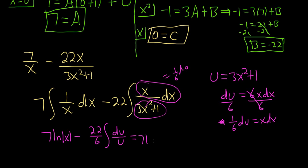So this is 7 ln absolute value of x minus 11 thirds. Right, you can simplify 22 over 6 just by dividing by 2. ln absolute value of u. But u is 3x squared plus 1. And we're almost done. Let's just not forget the plus C. It would be really funny but not funny to forget the plus C after all of this work. I mean oh my god. It's just a very long problem.